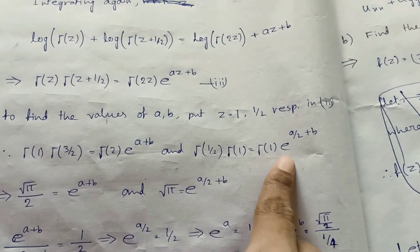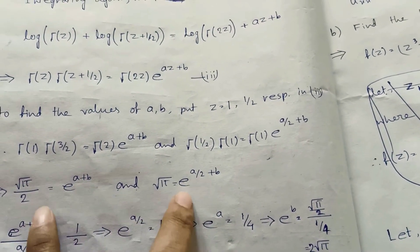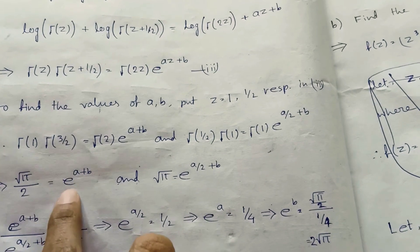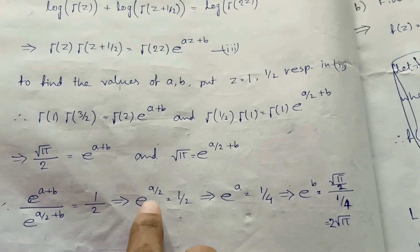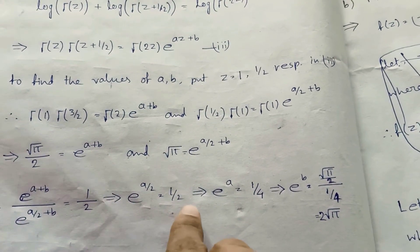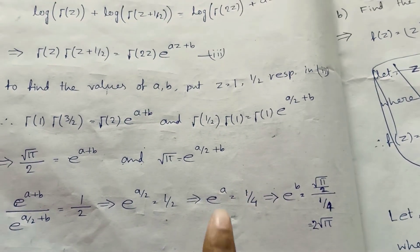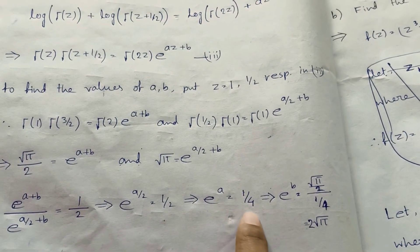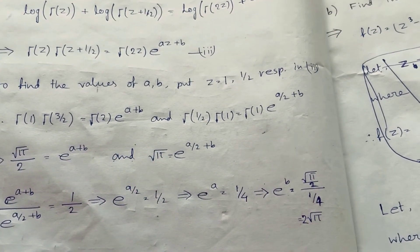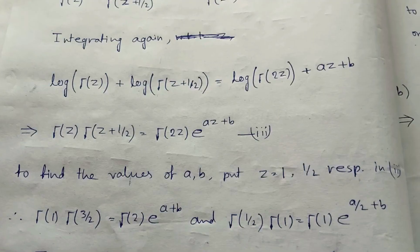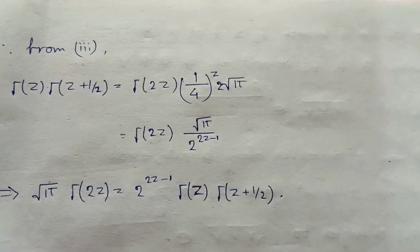Substituting z=1 and z=1/2 into Equation 3 gives two equations. Dividing one by the other yields e^(a/2) = 1/2, so e^a = 1/4. Squaring both sides confirms this, and substituting back gives e^b = 2√π.